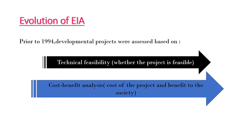Let's talk about the evolution of EIA. In 1969, in the United States, this process was adopted and later by many countries. In 1994, we had different development projects evaluated under two criteria: technical feasibility — whether the project is feasible and technically possible — and cost-benefit analysis, which is the process of evaluating benefits to society. But we also have to look at environmental issues.